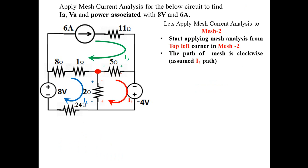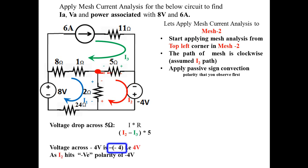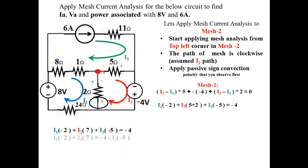Applying mesh current analysis to mesh 2: start at the top-left corner, traveling clockwise. Across 5Ω: (I2 - I3)×5. Across the -4V source: traveling clockwise we see negative first, so it is -(-4) = +4 volts. Across 2Ω: (I2 - I1)×2. Adding all sub-equations and substituting I3 = 6, we get Equation 2: -2·I1 + 7·I2 = 26.